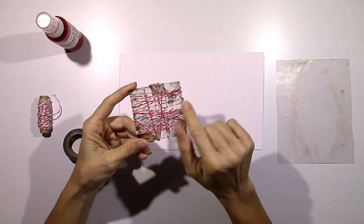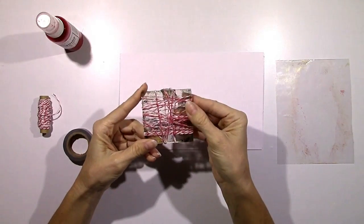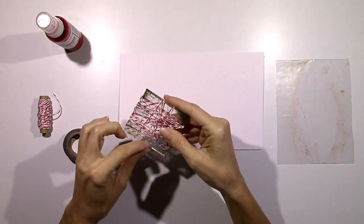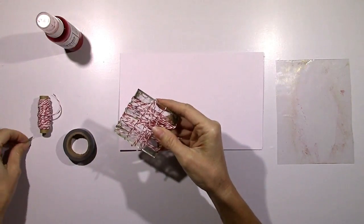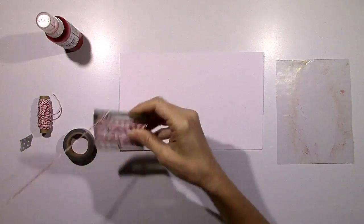For this I used a small clear acrylic stamping block and some floss or twine that I've had in my stash for a while, and I used some washi tape.